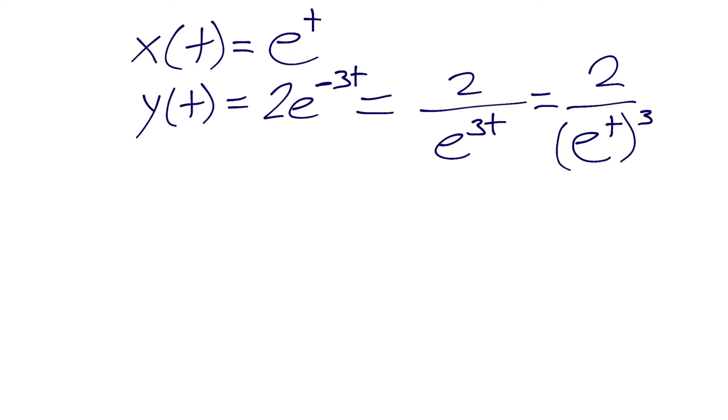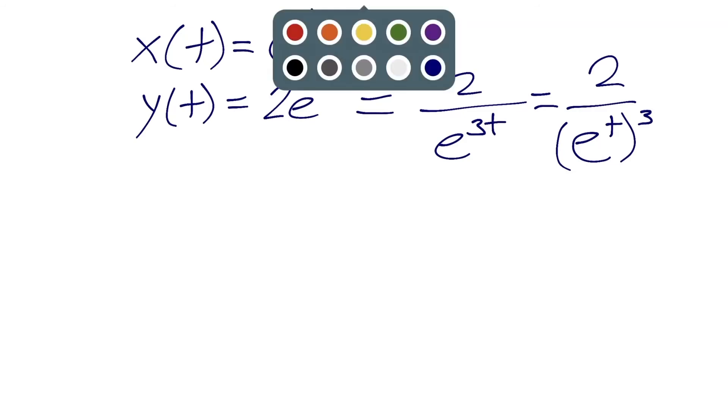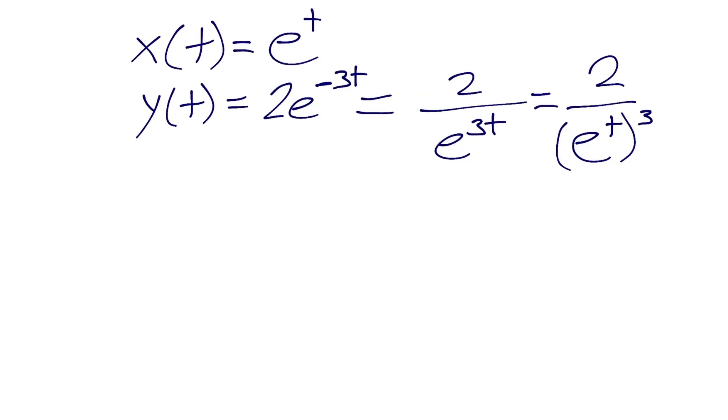And so now you probably see the substitution we can make. We have x equals e to the t as our first parametric equation. And now we can just plug in x for e to the t. So our new equation with y in terms of x will be y of x equals 2 over x cubed.